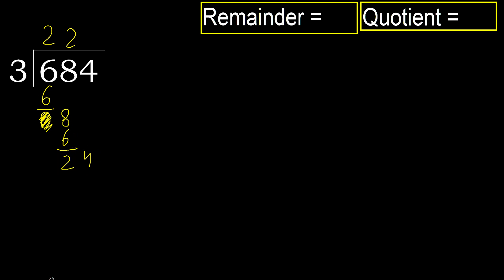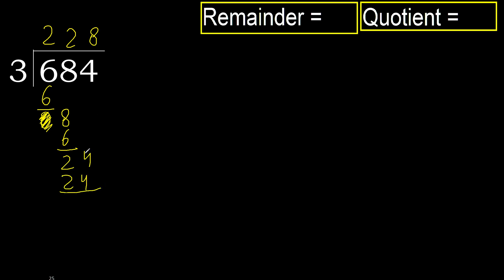3 multiplied by 9 is 27 — 27 is greater. 3 multiplied by 8 is 24 — 24 is not greater. 6 subtract. Next.